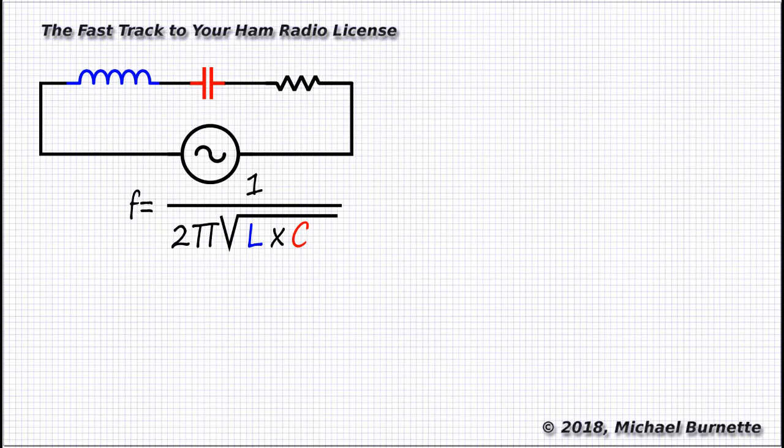Let's try one. Let's find the resonant frequency of a series circuit where R is 22 ohms, L is 50 microhenries, and C is 40 picofarads. This problem is in the extra exam question pool, by the way.